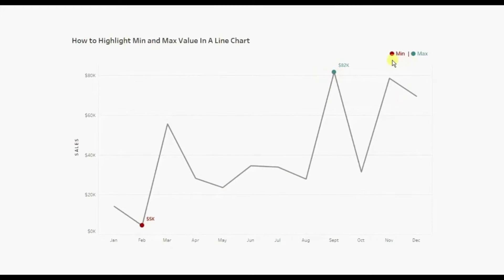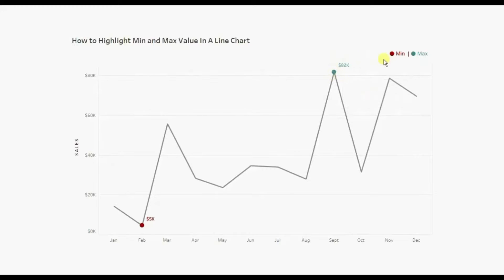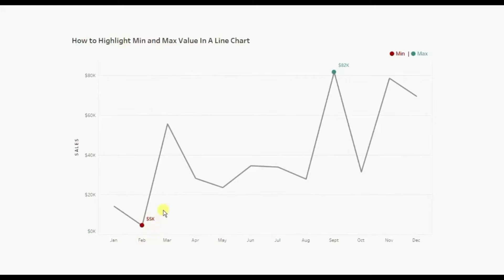From the legend we can figure out that the green color gives us the month with the highest sales and the red color gives us the month with the lowest sales. Now let's jump to Tableau and see how to highlight minimum and the maximum value in a line chart.